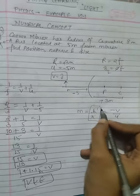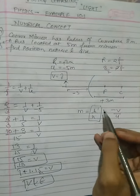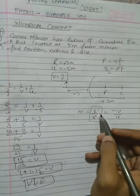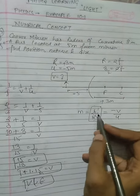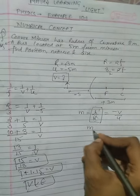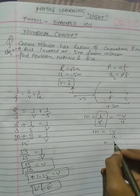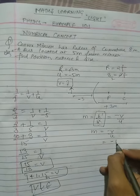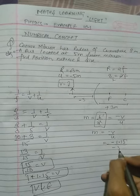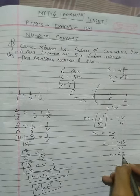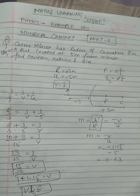We have magnification formula. This is the object height, so we can use it. Minus v upon minus 5, so this is 0.23 magnification.